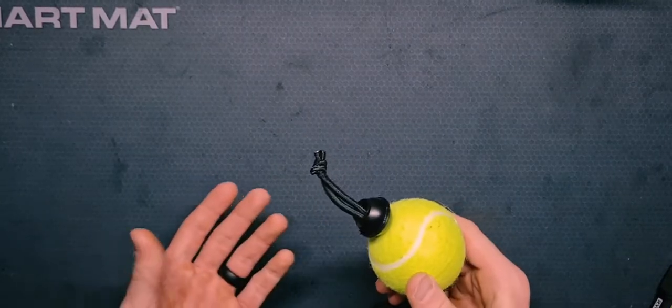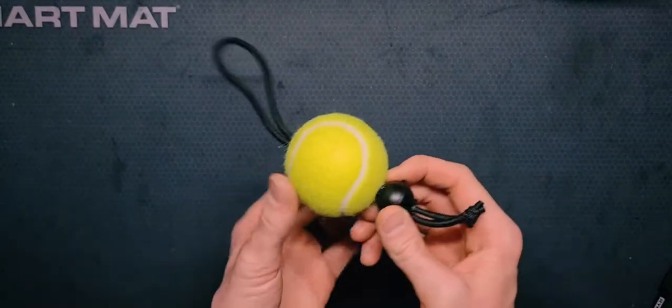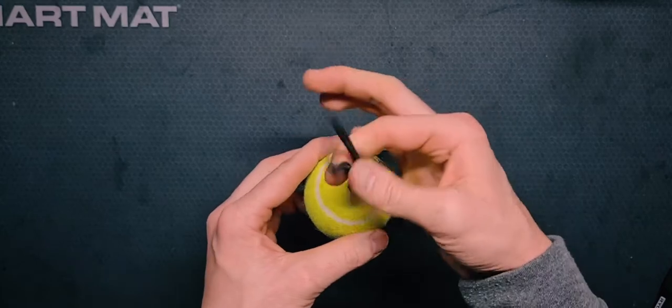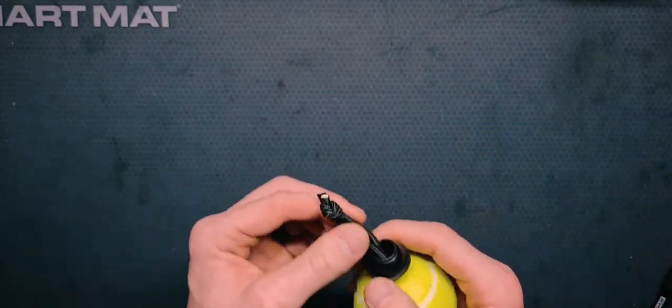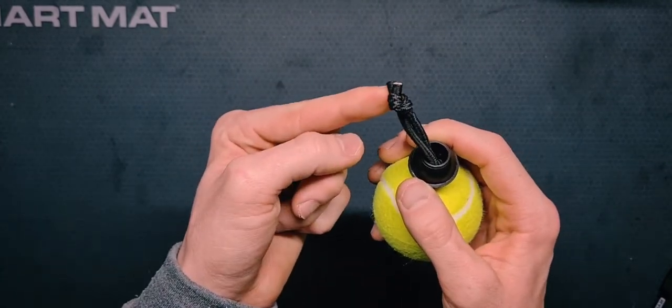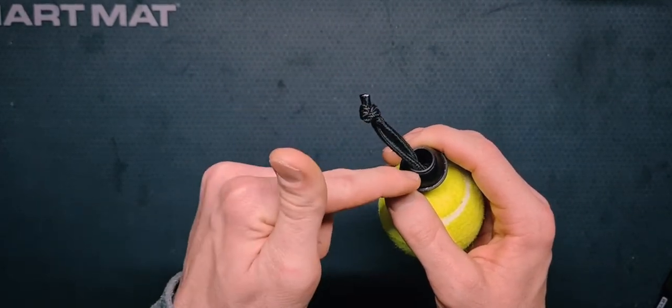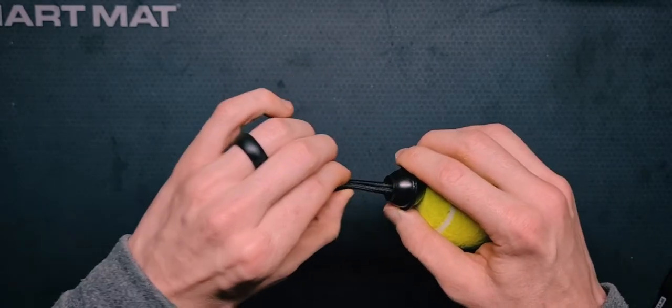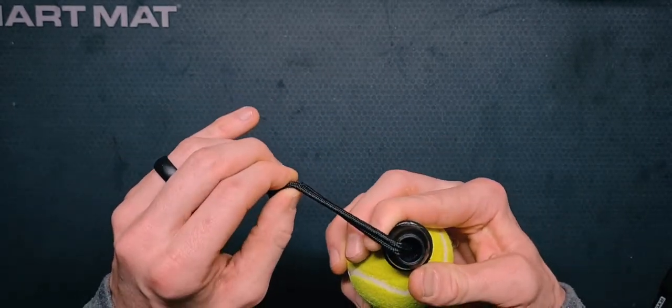Take a Phillips head screwdriver, take your ball bungee, ream it right through both holes, pull it through, and then you take out the paracord that was originally knotted. See, this is the original knot that was in there. You fish it out, pull it out, make your own knot.